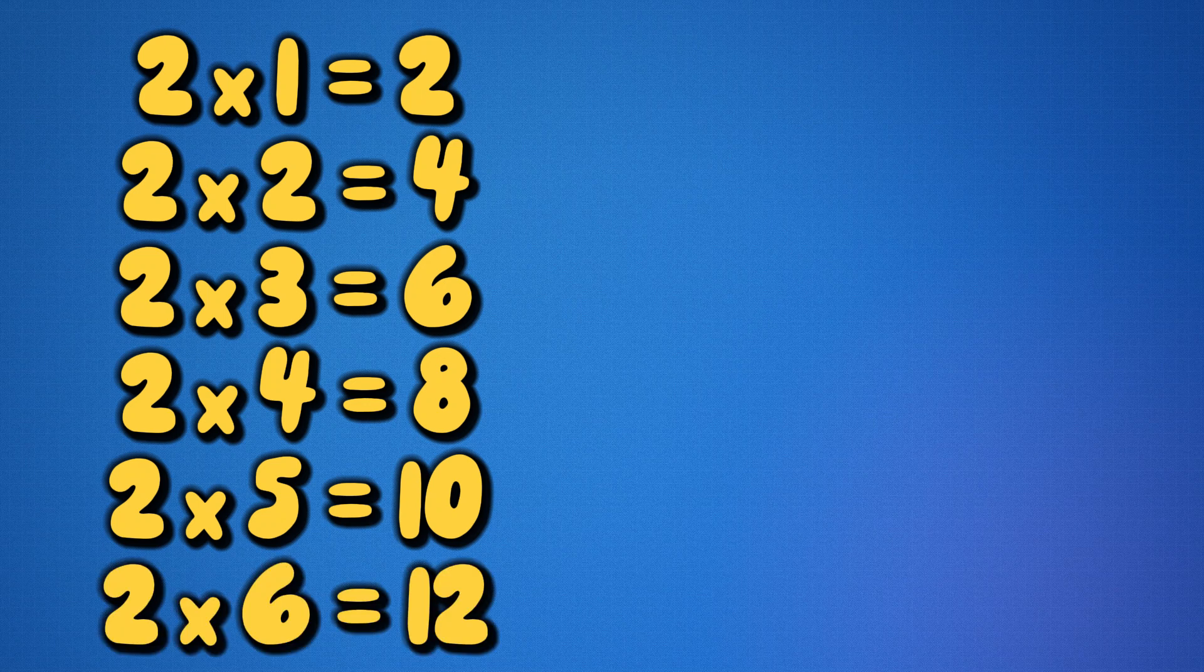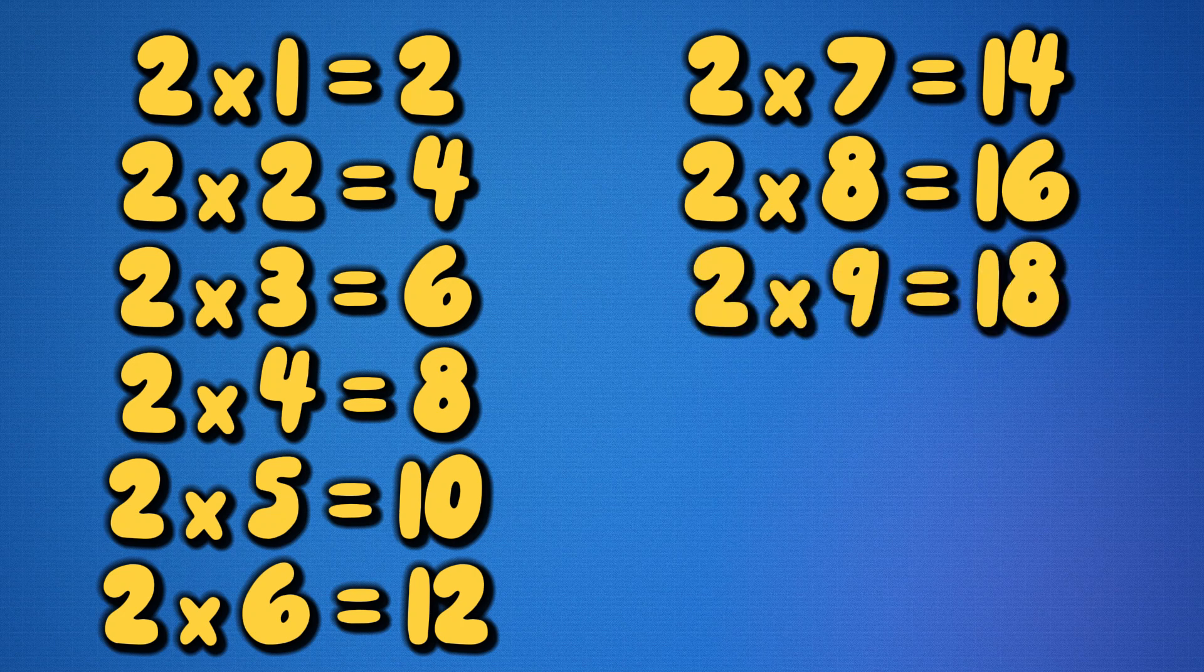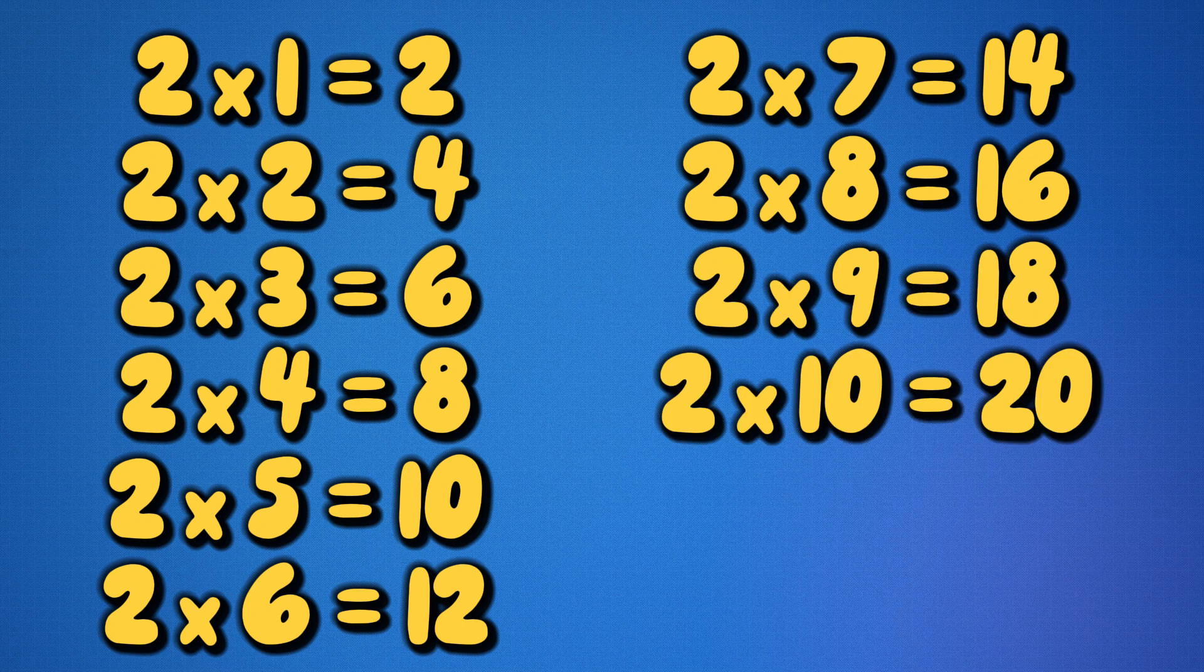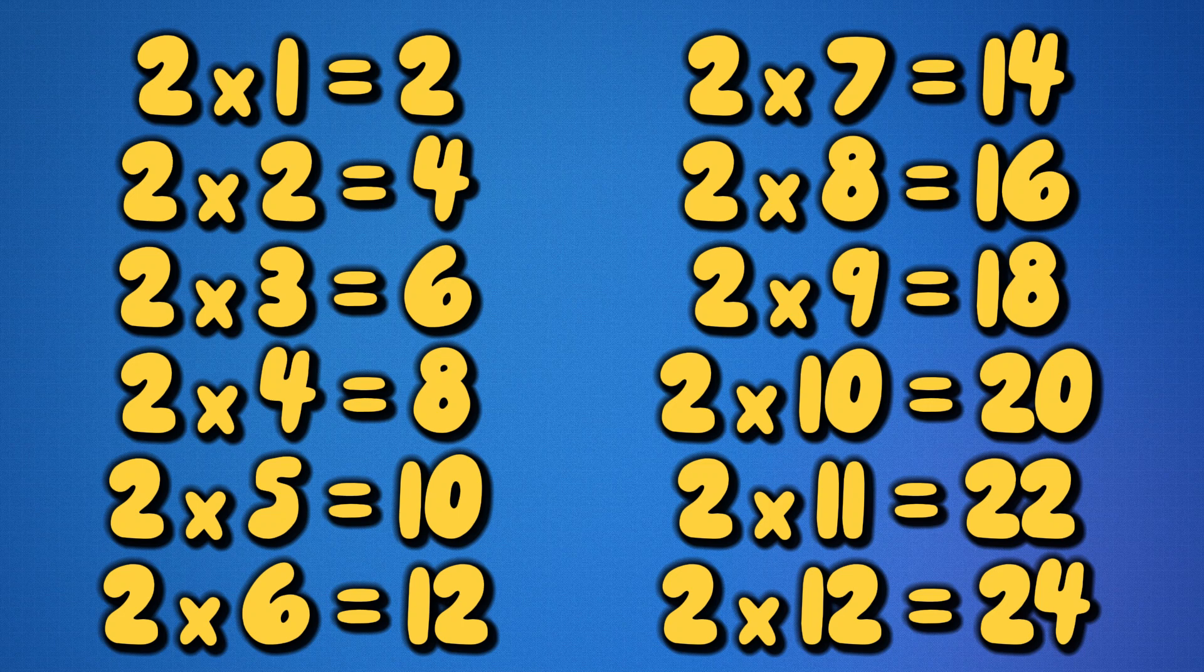Two times seven is fourteen. Two times eight is sixteen. Two times nine is eighteen. Two times ten is twenty. Two times eleven is twenty-two. Two times twelve is twenty-four.